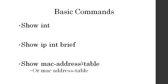Some basic commands: show interface will show you a full page of information for each interface. Show commands are typically from privilege mode, but if you're in global mode put the word do in front — do show int. Show int gives you an entire page per interface — very detailed but 12 interfaces means 12 pages. Show IP interface brief gives you a brief chart: interfaces, IP addresses, and status. Show MAC-address-table or show MAC dash address dash table shows the CAM — the syntax varies by IOS version.